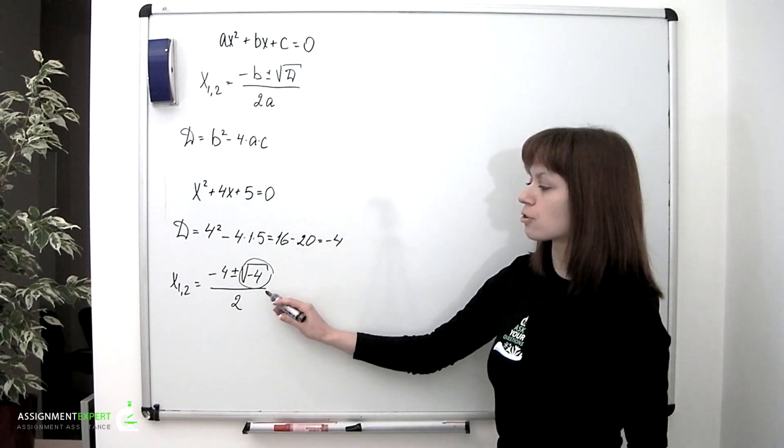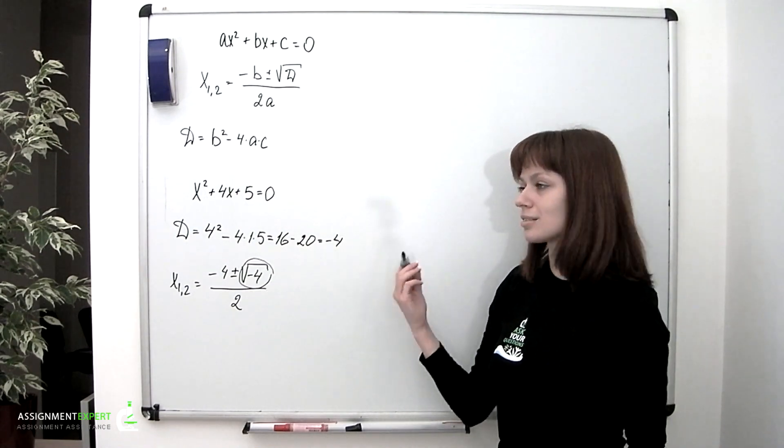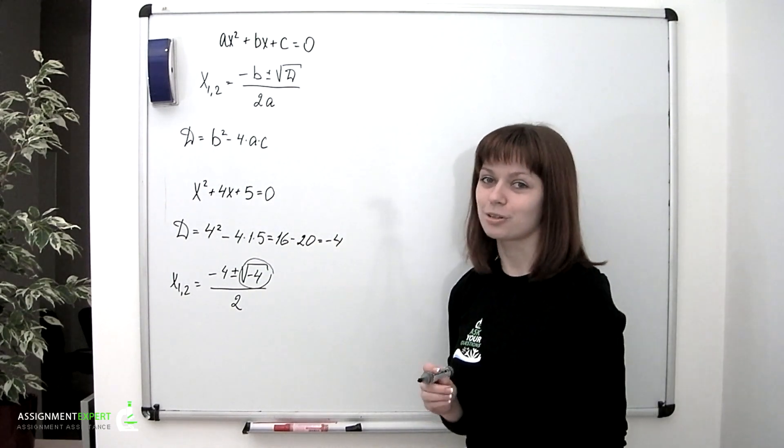So if square root of negative 4 has no place among real numbers, why can't we imagine another type of numbers containing it? And those crazy mathematicians actually did that long ago.